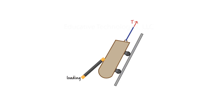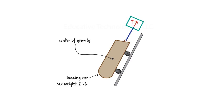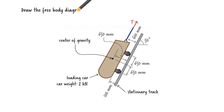Here, we have a car that weighs 2 kilonewtons. We assume the weight acts at the center of gravity of the car. A cable attached to the car is holding it in place, and the tension force being applied to the cable is denoted by T. The car rests on a stationary track that makes a 50-degree angle with the horizontal axis, and the key distances are known. We wish to draw the free body diagram for determining the magnitude of force T.